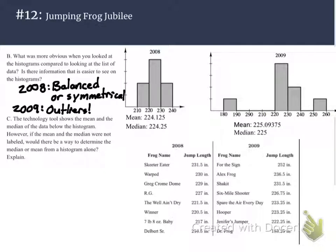Letter C says, the tech tool shows the mean and the median of the data below the histogram. So right here and right here. However, if the mean and median were not labeled, would there be a way to determine the median or mean from the histogram alone, and then explain?